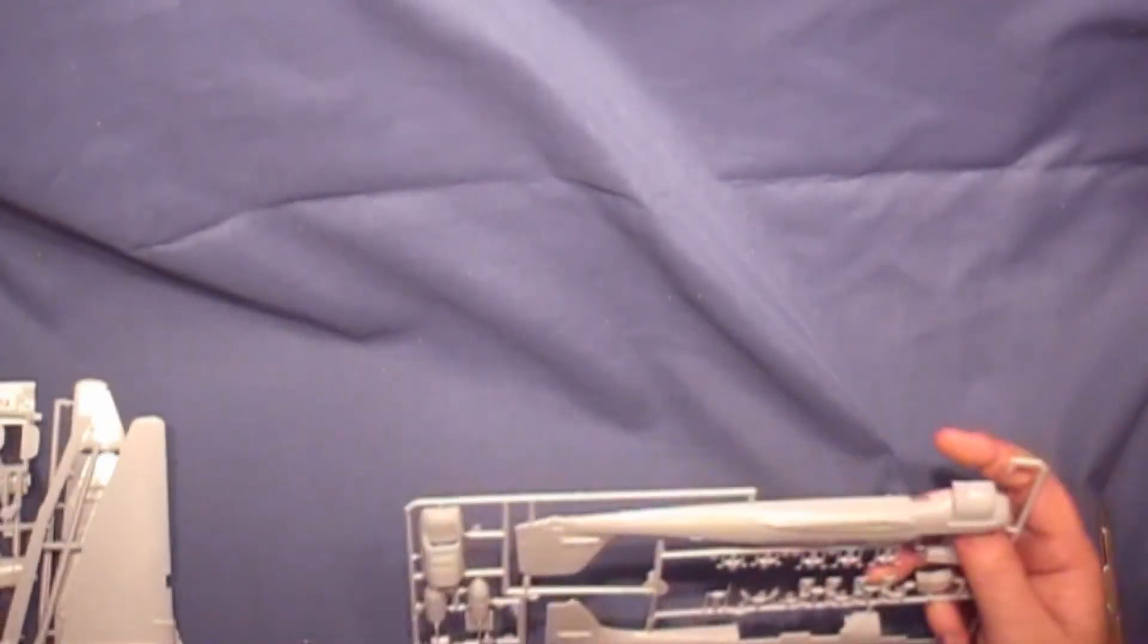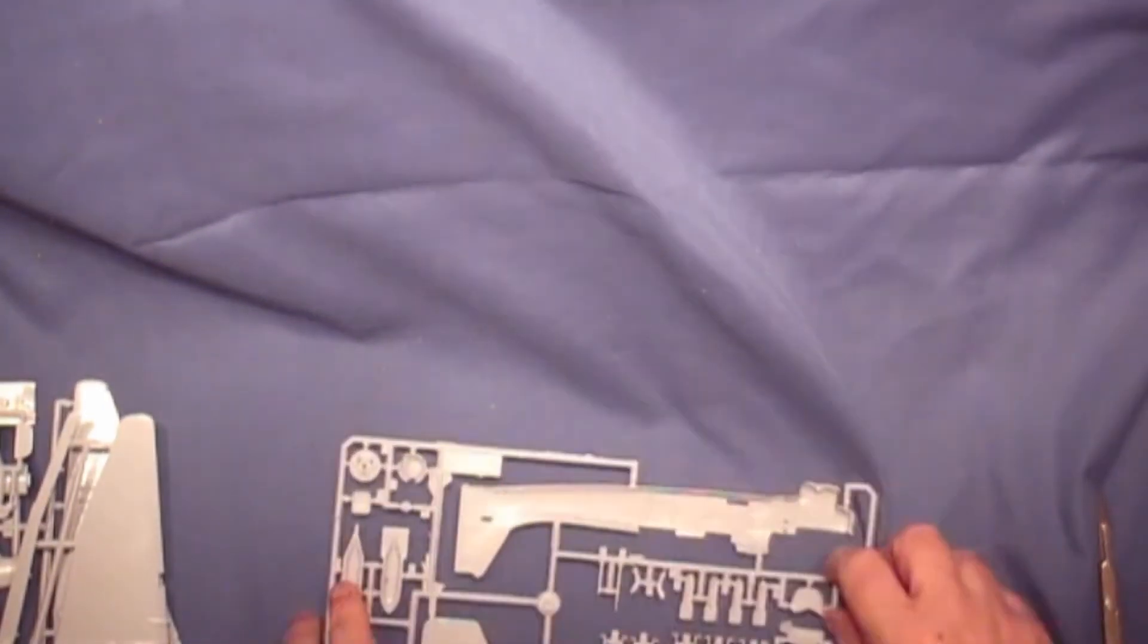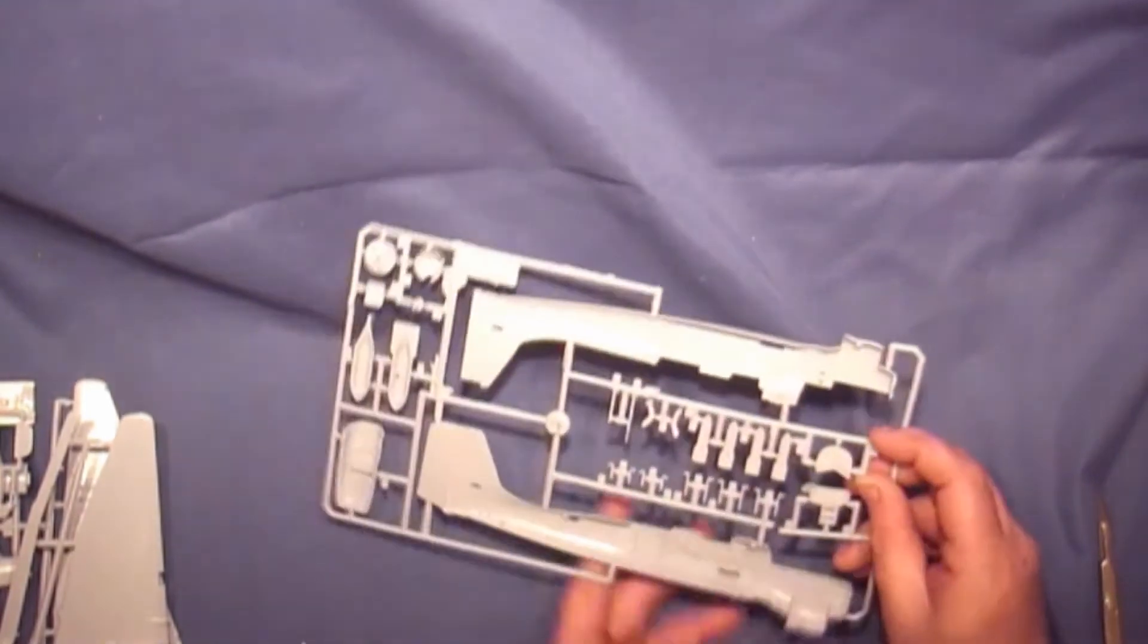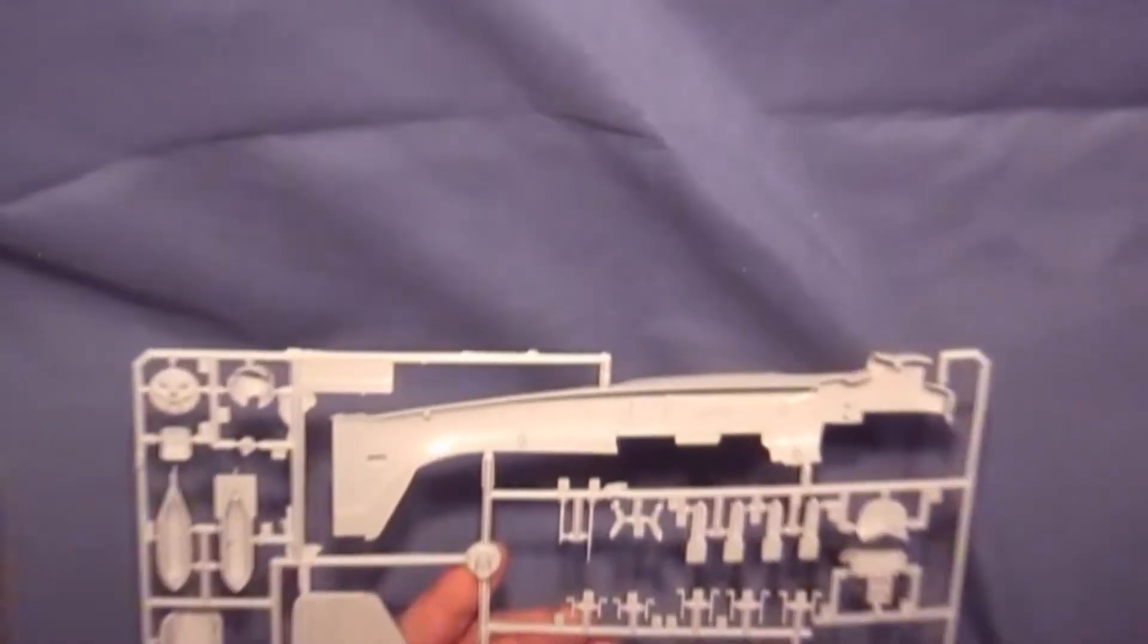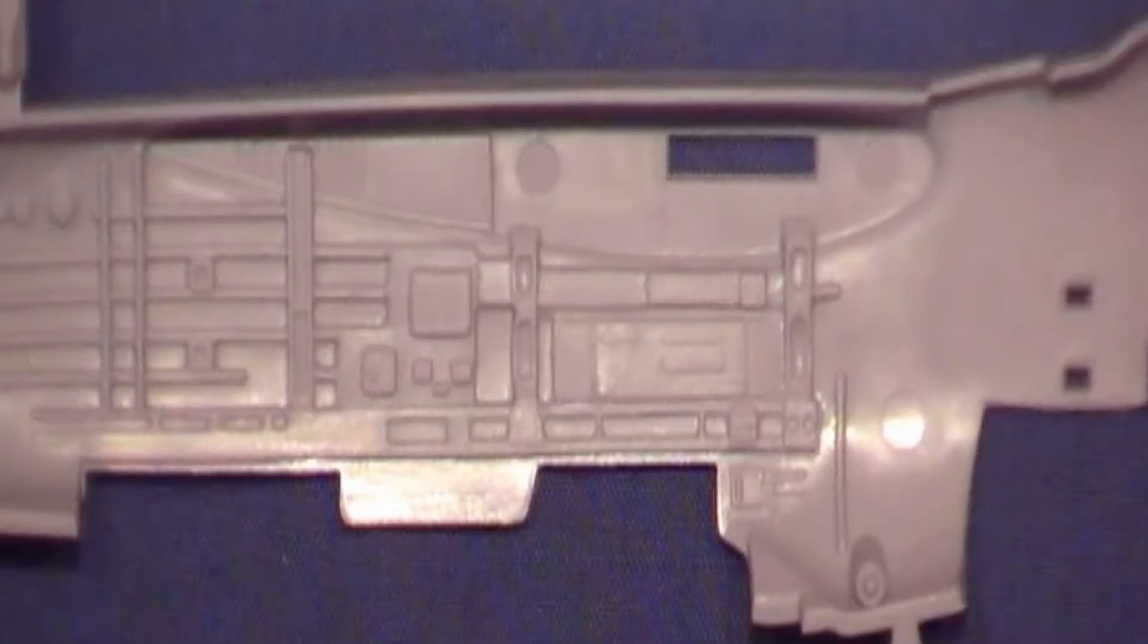Right, you've got three screws in this one, and have a look inside here. We've got some nice detail. Let me come in a bit. I can't see it there. Where is it there? You've got some nice detail on the inside of both of the fuselages here. You can do some nice work on that.